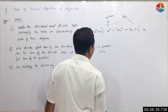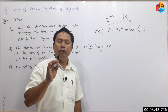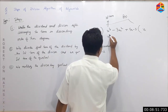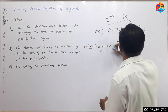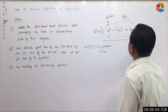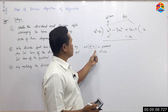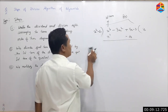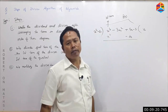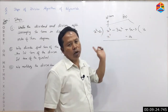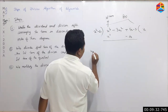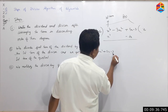The product is x cubed minus 2x. We multiply the divisor by the quotient term and obtain the product x cubed minus 2x. Then we subtract: x cubed minus 3x squared plus 5x minus 3, minus (x cubed minus 2x) gives minus 3x squared plus 5x minus 3.